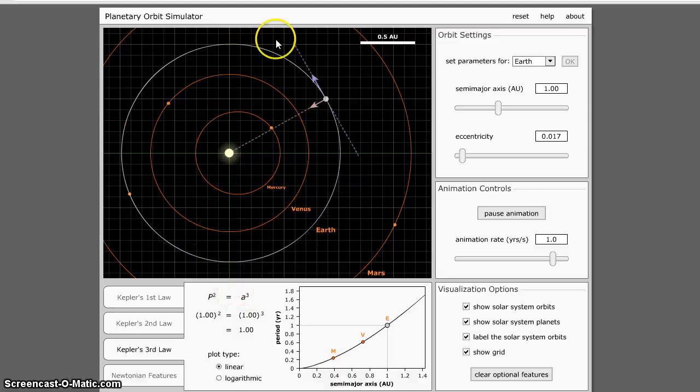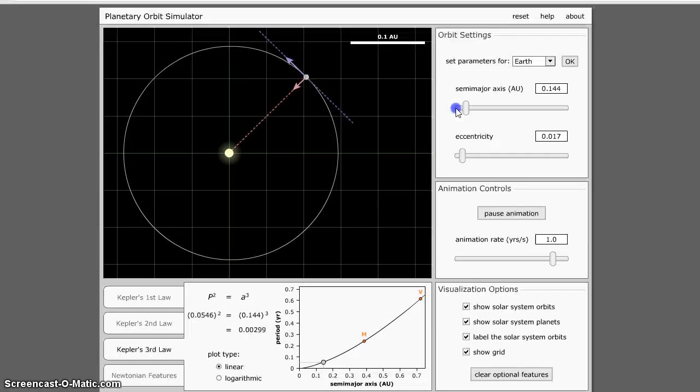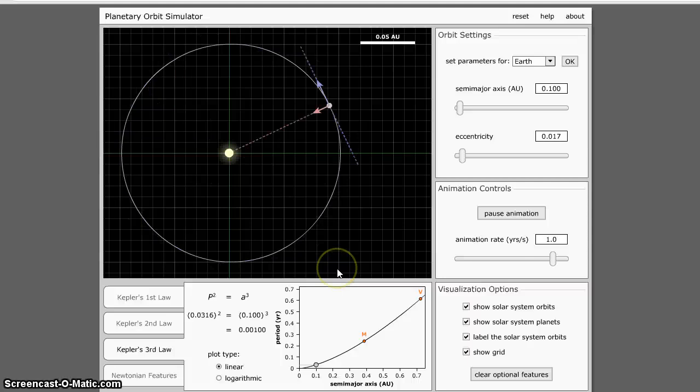A is the semi-major axis. For Earth, the semi-major axis is 1 AU because we define an astronomical unit as an average distance from the Earth to the Sun. Now, if you change this, if we make it smaller, then we can see that it is going around faster.